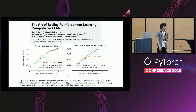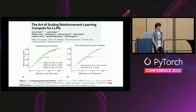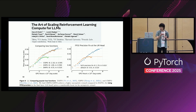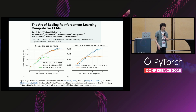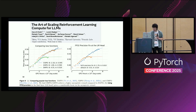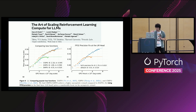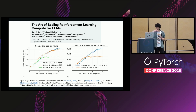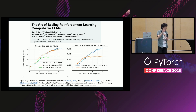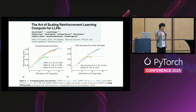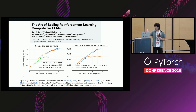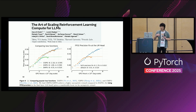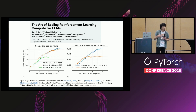Meta released a paper recently — 'The Art of Scaling RL' — which is extremely powerful. It shows that just changing a few algorithms, like GSPO or Cisco, can increase the probability of seeing good answers and make RL training much faster. Another trick is using Float32 for the LM head, which somehow increases accuracy. There are many tricks you can do to make the process much better.